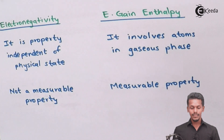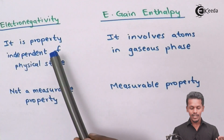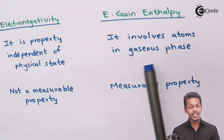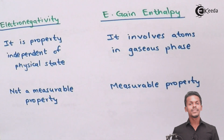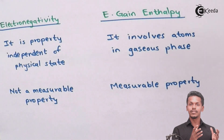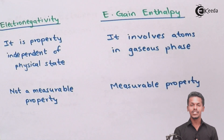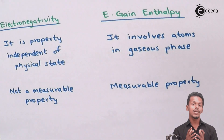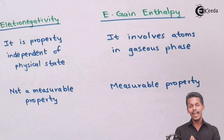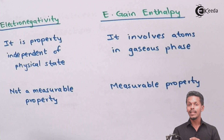Another difference: electronegativity is a property independent of physical state, while electron gain enthalpy involves an atom in the gaseous phase. Electronegativity does not depend upon the phase of a particular compound — it may be gaseous, solid, or liquid phase. It only depends on the tendency of a particular atom to attract electrons, regardless of state.